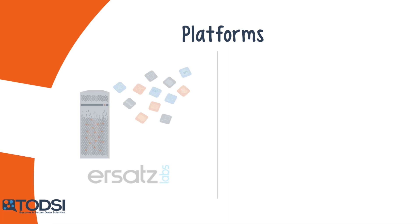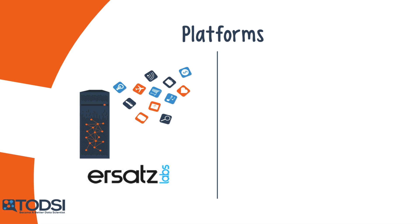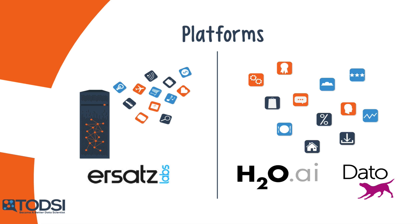Soon we'll take a look at Ersatz Labs, a dedicated deep learning platform that handles all the technical issues like code, deployments, and performance, and allows the user to go straight to modeling. We'll also look at two machine learning software platforms called H2O and GraphLab Create, both of which offer deep learning tools. Note that since the latter two are software platforms and not full platforms like Ersatz, they would need to be installed on your own personal hardware.